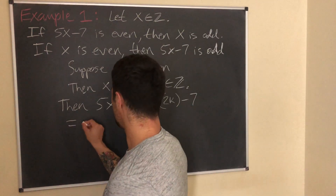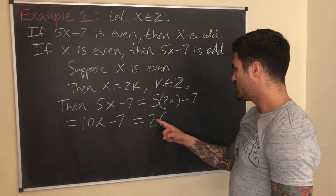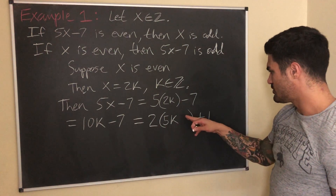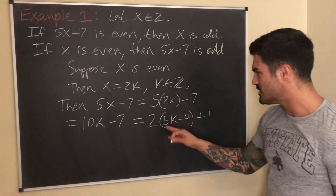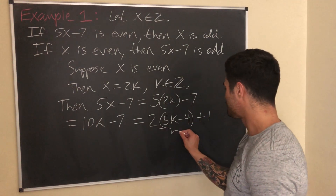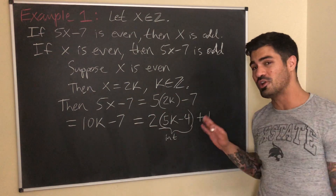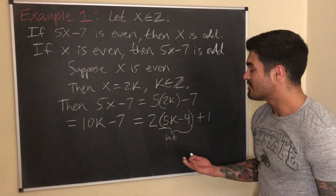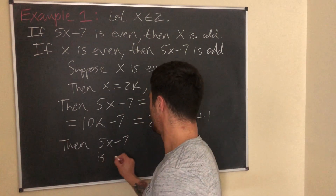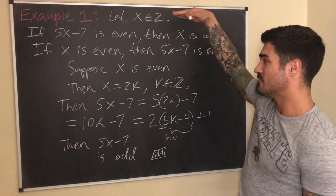Now I want to write 10k minus 7 in the form 2 times an integer plus 1. I can rewrite it as 2(5k minus 4) plus 1. Since 5k minus 4 is an integer, we have shown that 5x minus 7 equals 2 times an integer plus 1, which is the definition of an odd integer. Therefore 5x minus 7 is odd, and the proof is complete. We've proven the contrapositive, so the original statement is true.